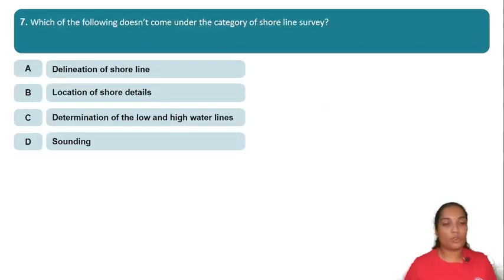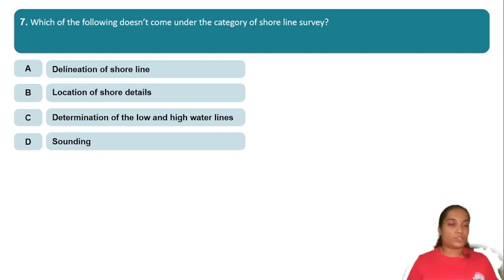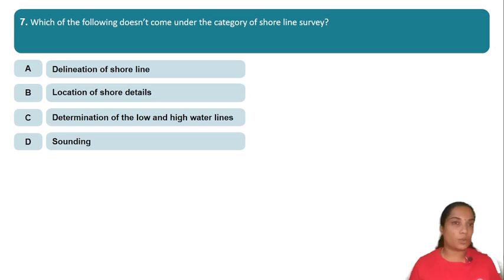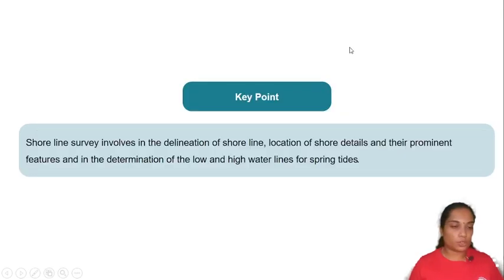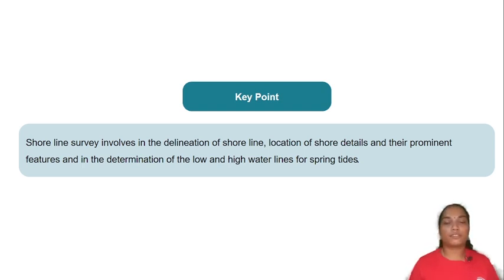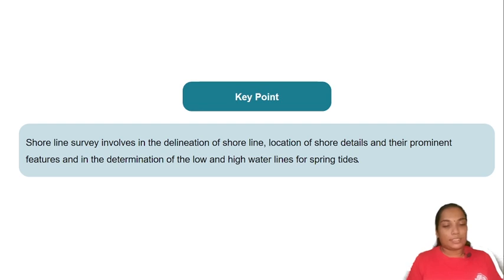Which of the following doesn't come under the category of shoreline survey? The options include: delineation of shoreline, location of shore details, determination of low and high water lines, and sounding. Sounding does not come under shoreline survey. Shoreline survey involves delineation of shoreline, location of shore details including physical features, and determination of low and high water lines for spring tides.